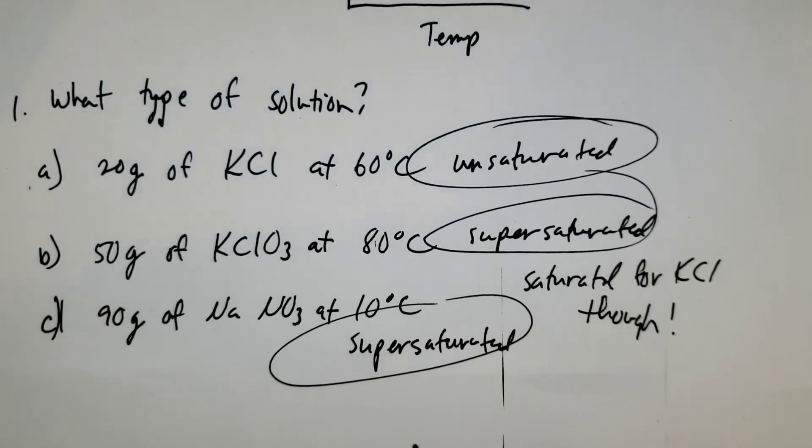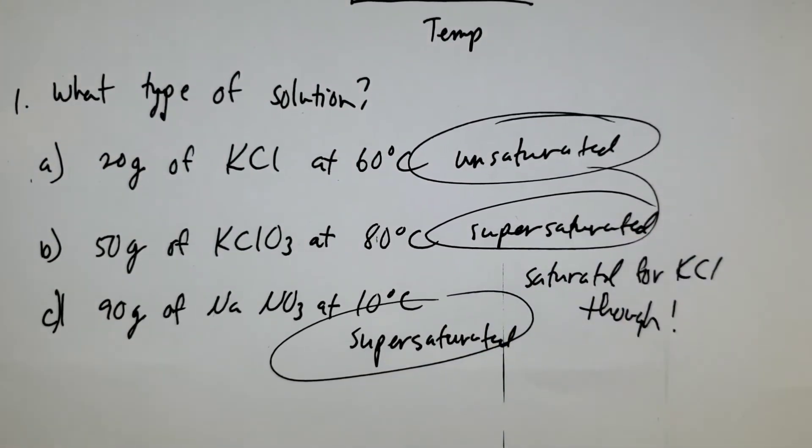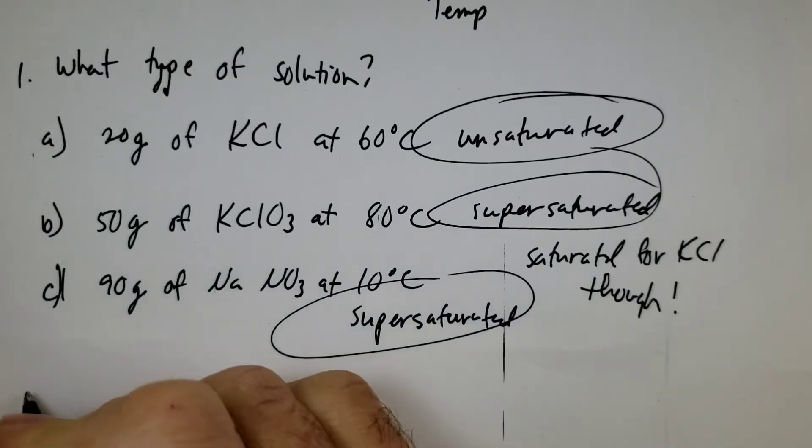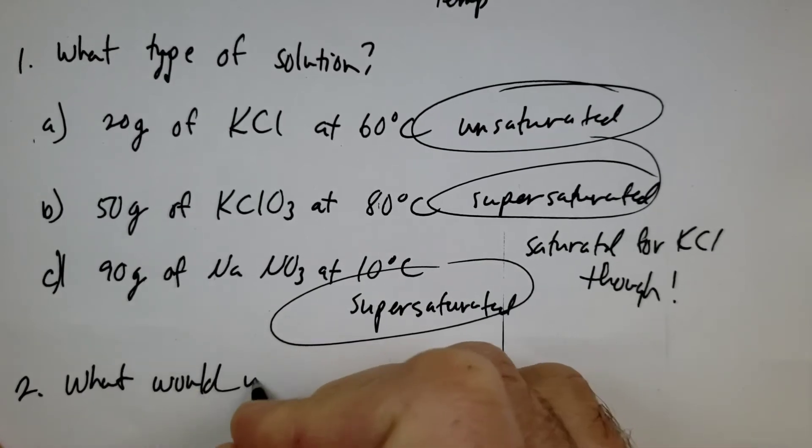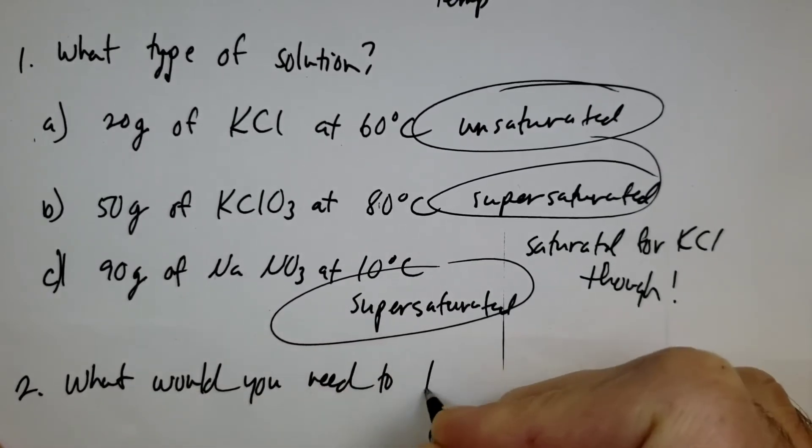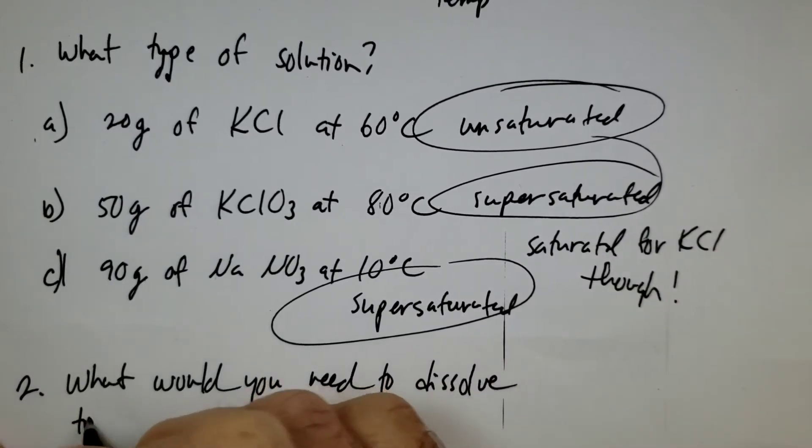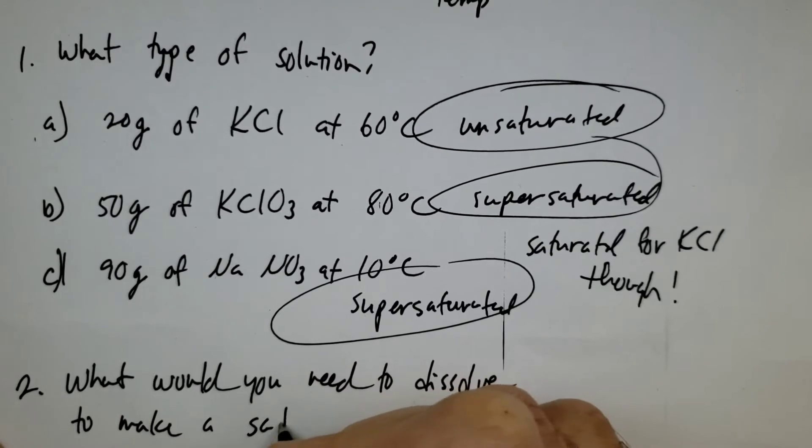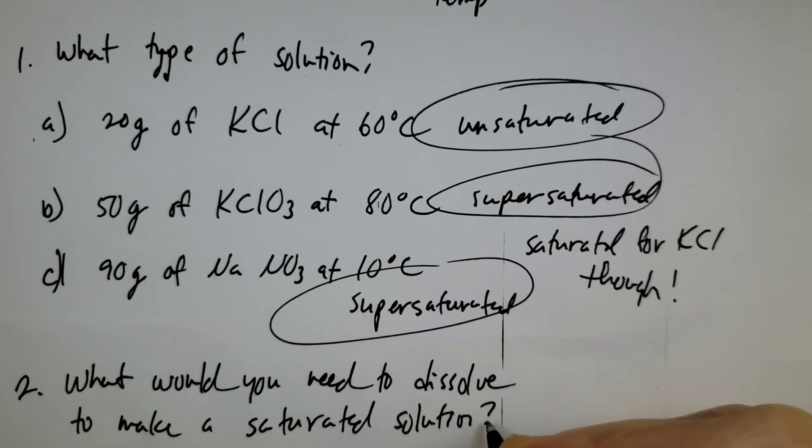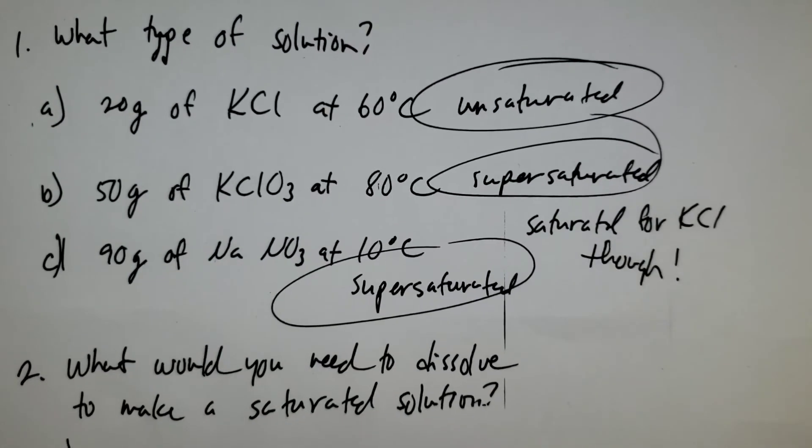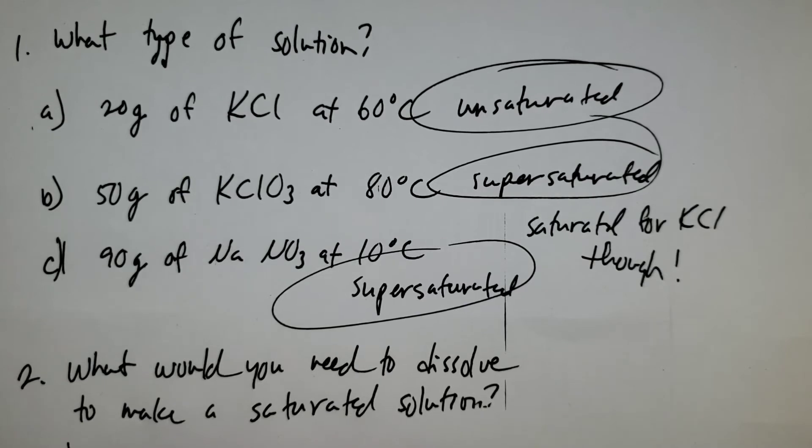Okay, so that's how you read that curve. Let's maybe do a couple more here. Let's look at number two. What would you need to dissolve to make a saturated solution? So let's just do two examples there.